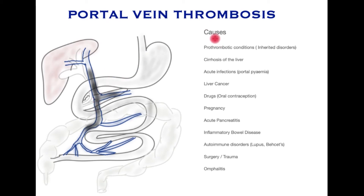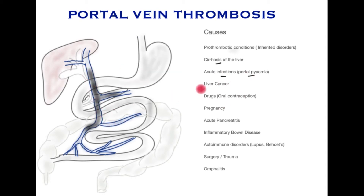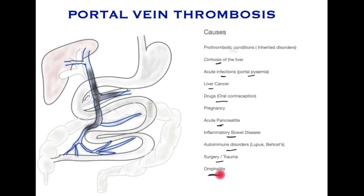Why should a clot arise in the portal vein? There's a long list of causes. The common ones include: conditions of the blood such as inherited thrombophilias; cirrhosis of the liver, where there is more scar tissue in the liver; acute infections in the abdomen which may result in portal pyemia, where bacteria infect the blood within the portal vein; liver cancer itself; medications such as oral contraceptives; pregnancy; acute pancreatitis, where inflammation of the pancreas may cause inflammation within the portal vein and clot formation; inflammatory bowel disease; autoimmune disorders such as lupus and Behçet's syndrome; surgery or trauma to the abdomen; and around the time of birth, infection or inflammation of the umbilical stump may cause portal vein thrombosis in the newborn.